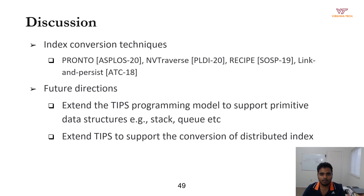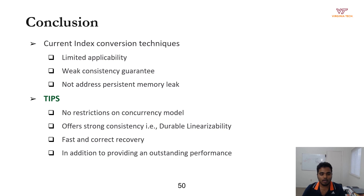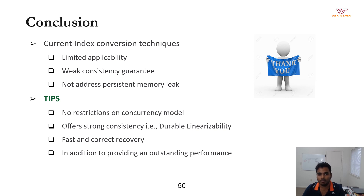As we come to the end of the talk, we would like to thank prior index conversion works — Recipe, Pronto, and NVTravers — for taking this important research direction and making their source code and benchmarks publicly available. The current version of TIPS focuses on converting indexes, and as future work, we would like to extend TIPS to support conversion of primitive data structures. To conclude, current index conversion techniques have several limitations such as limited applicability and supporting only weaker consistency. We propose TIPS, a framework to make volatile indexes persistent in an index-agnostic way, offering strong consistency, correct recovery, and outstanding performance over prior techniques and NVMM-optimized indexes. Thank you.